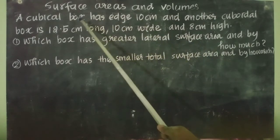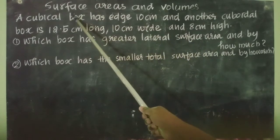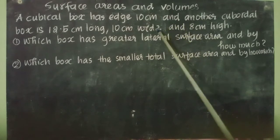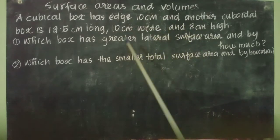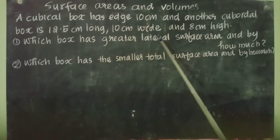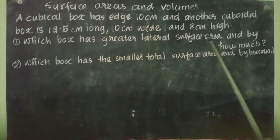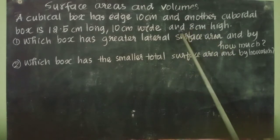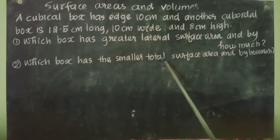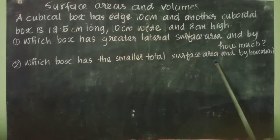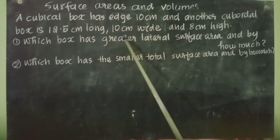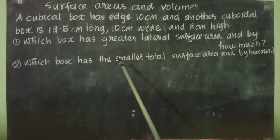There is a cubical box and a cuboidal box. We need to find out the lateral surface area of both and total surface area of both, and compare them.